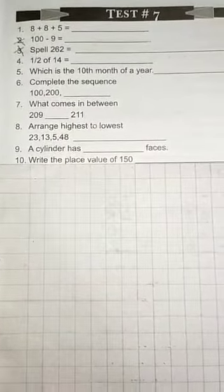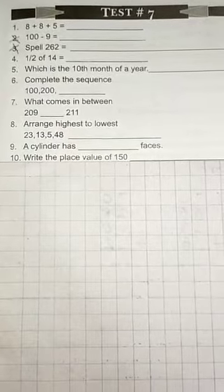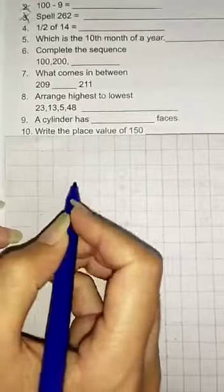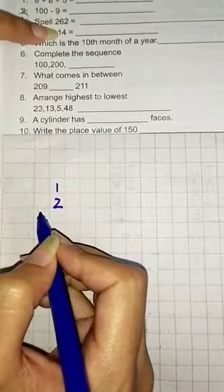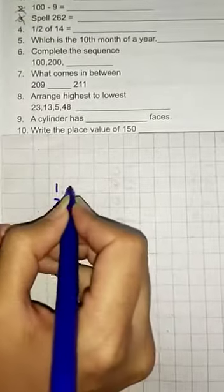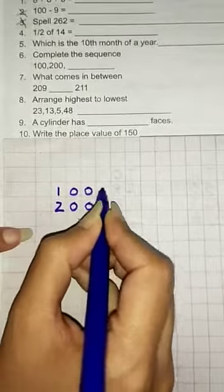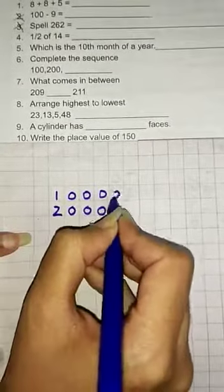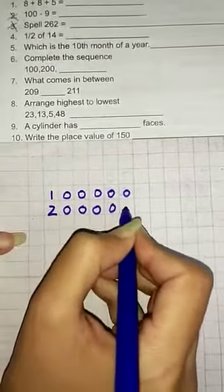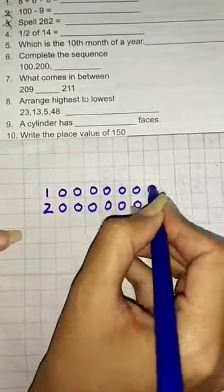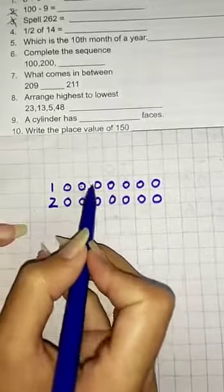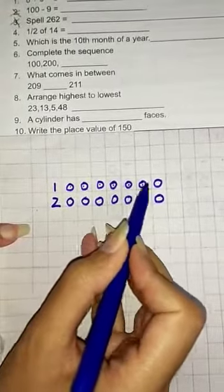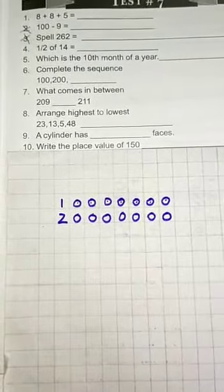Question number 4. Half of 14. Half means 2 parts. So 1 and 2. And how many? 14. So we divide 14 into 2 parts. 1, 2, 3, 4, 5, 6, 7, 8, 9, 10, 11, 12, 13, 14. So each part will get how many? 1, 2, 3, 4, 5, 6, 7. So half of 14 is 7.